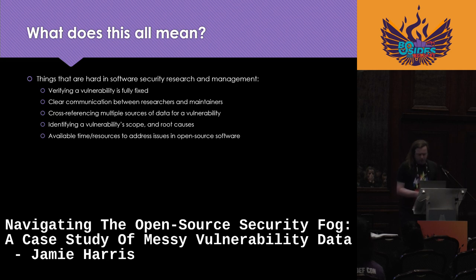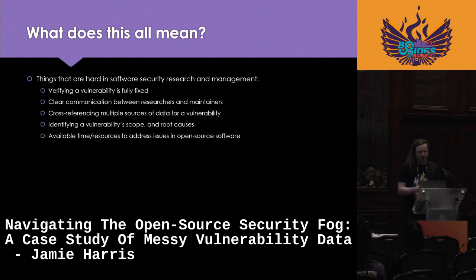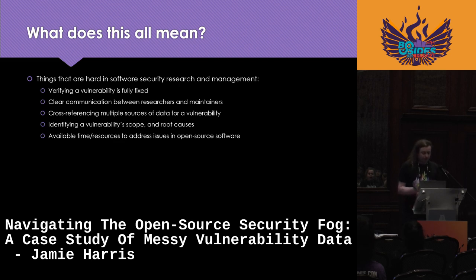Another thing — not unique to open source but maybe exacerbated by it — is available time and resources to address issues. Seven disclosures over seven years with large time gaps is just the reality sometimes of open source software. The popularity and usage of open source isn't necessarily related to the amount of available time and resources people can put into maintaining it, or into making sure security issues are addressed in a timely fashion. Sometimes a lot of time can pass before these things are addressed, just sitting in the public domain for any bad actor to realize they can be exploited.